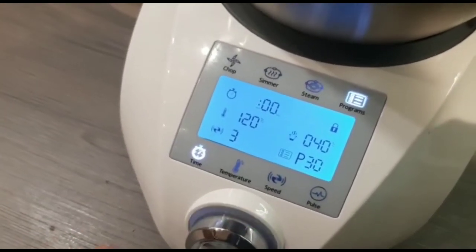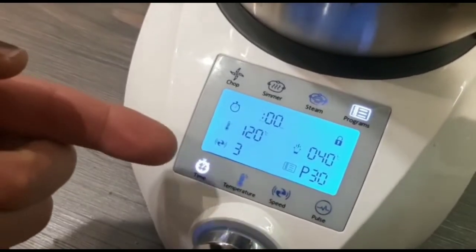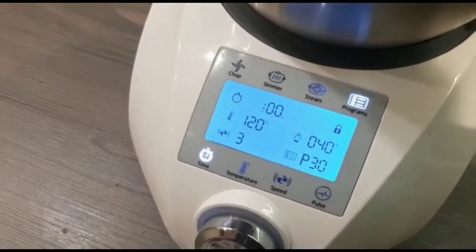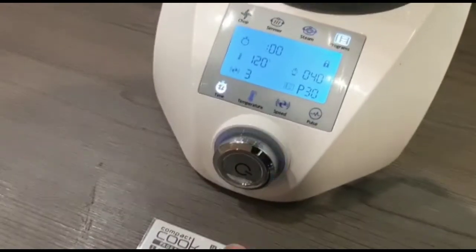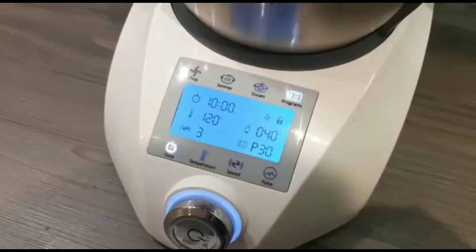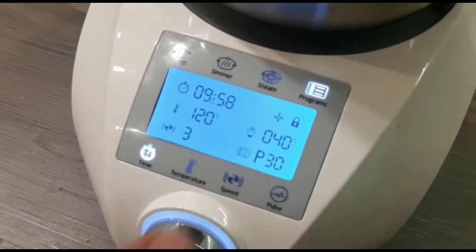The program is between 10 and 15 minutes. The temperature is 120, which is okay, and the speed is 3, which is the maximum speed. Let's get this started. As you can see, the temperature actually in the bowl is 40 degrees.